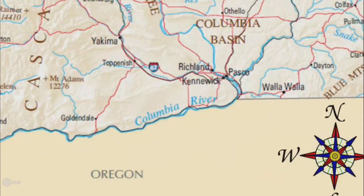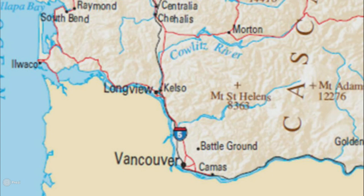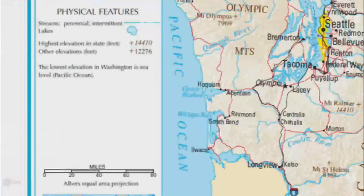The Columbia River is a large river between Washington and Oregon. Interstate 5, or I-5, is an important highway in Washington State. Last, the Pacific Ocean is to the west of Washington State.